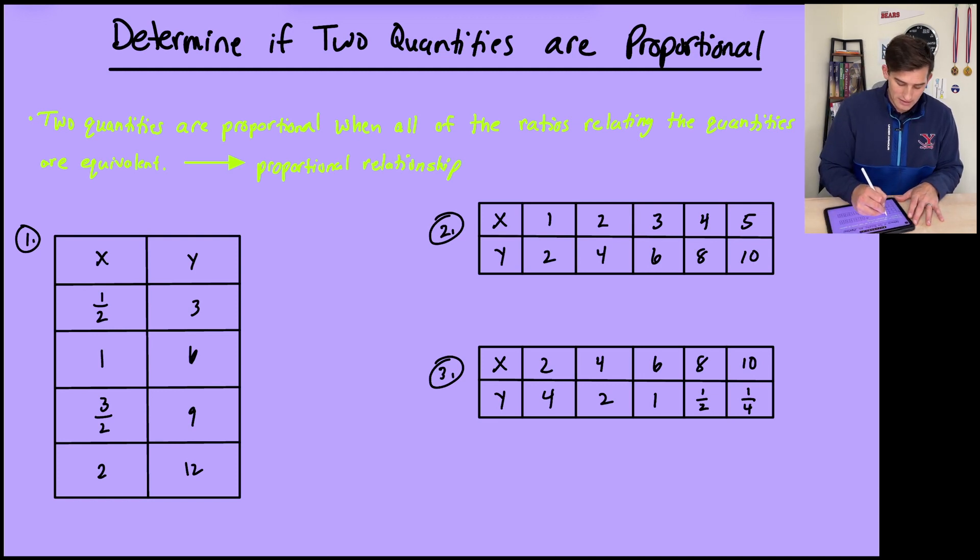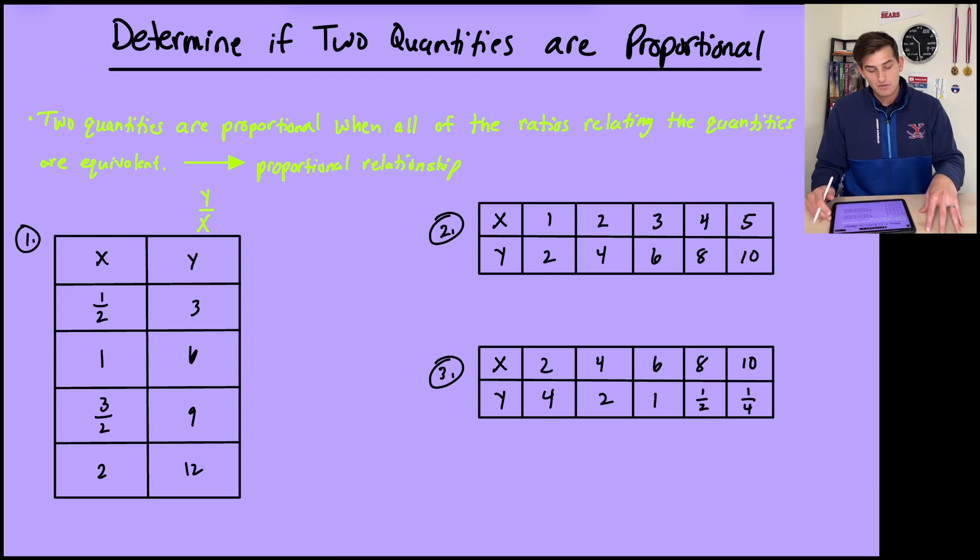So we want to take a look at all of these terms and we want to divide y by x. And when we do this division, if we get the same result each time we do the division all the way down the table, then we can say the quantities are proportional. On the contrary, if we don't get the same thing for our division, then we're going to say it's not proportional. So we've got three examples here, let's dive right in.